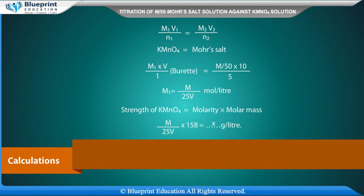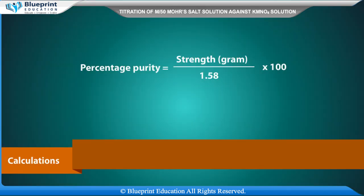Calculations: M1V1/N1 = M2V2/N2, where KMnO4 corresponds to Mohr's salt. M1 × V(burette) / 1 = (M/50) × 10 / 5. Therefore M1 = M/(25V) mol/L. Strength of KMnO4 = Molarity × Molar mass = M/(25V) × 158 = X g/L. Percentage purity = (M1 / 50V) × 100.